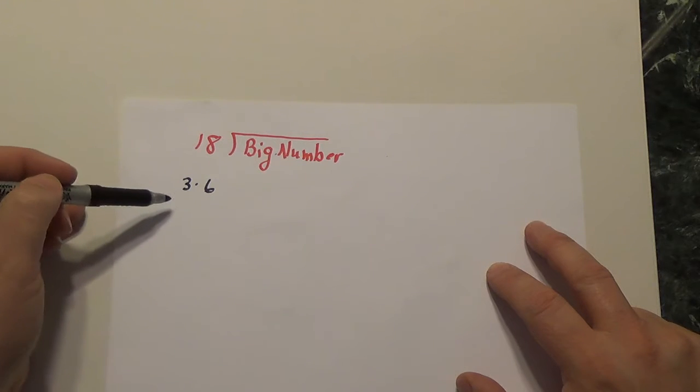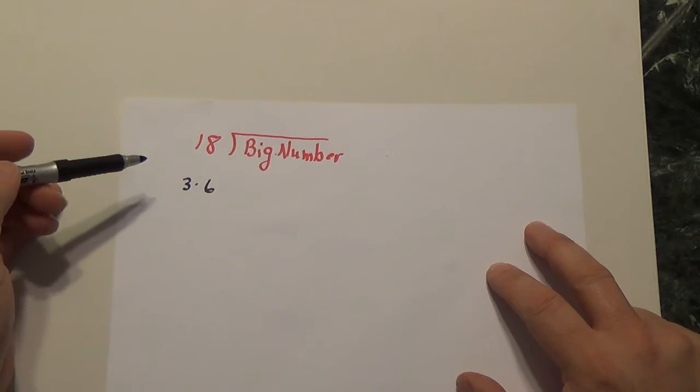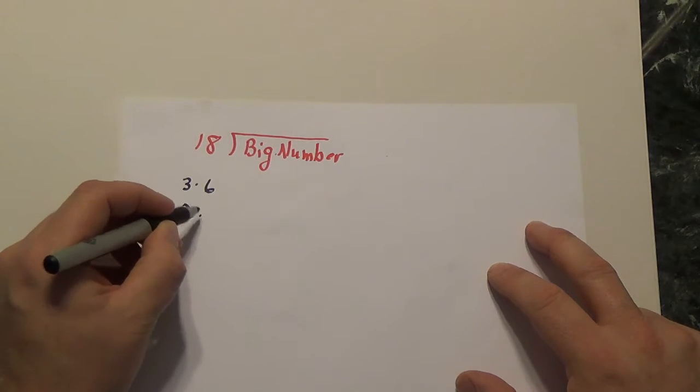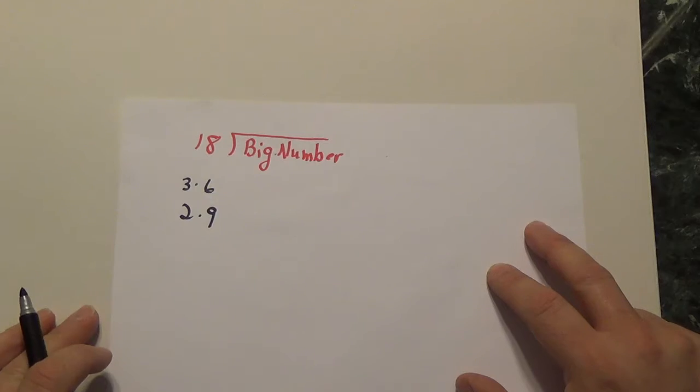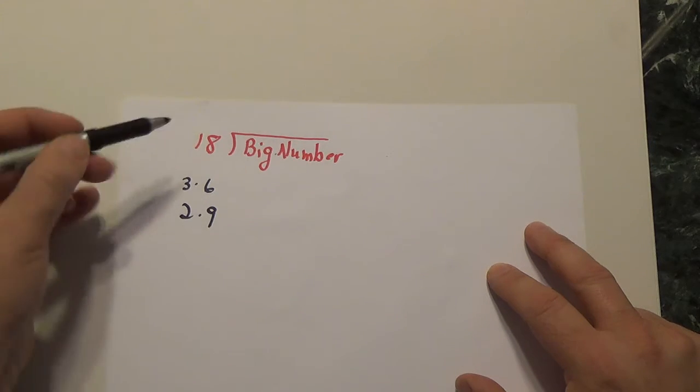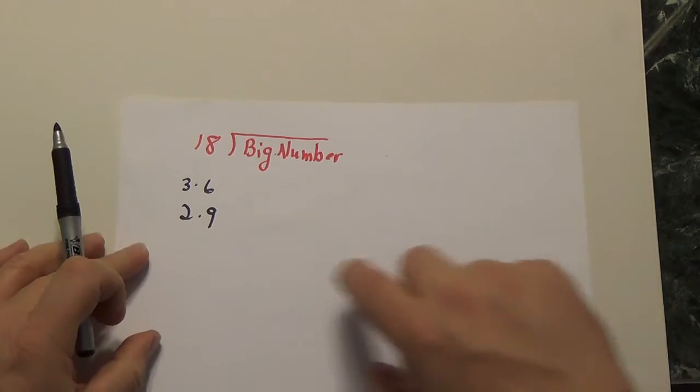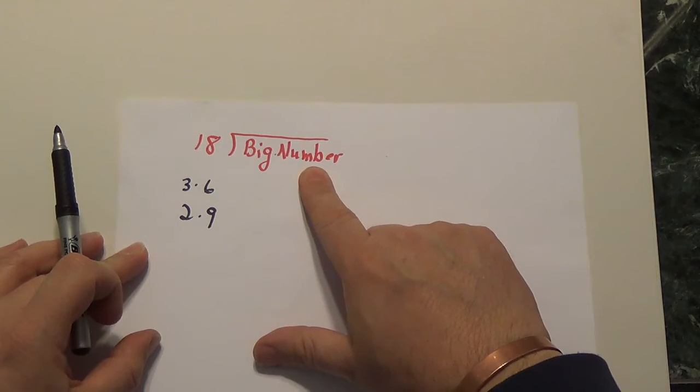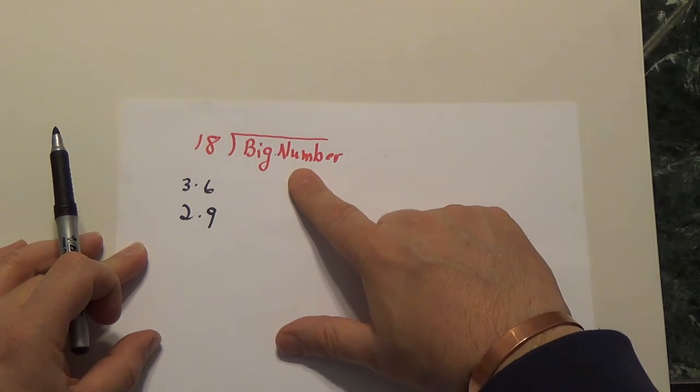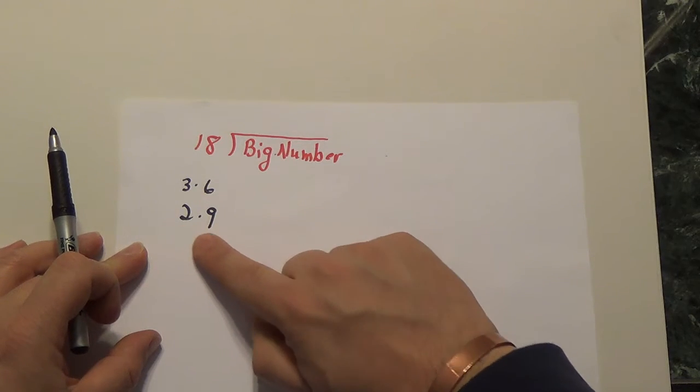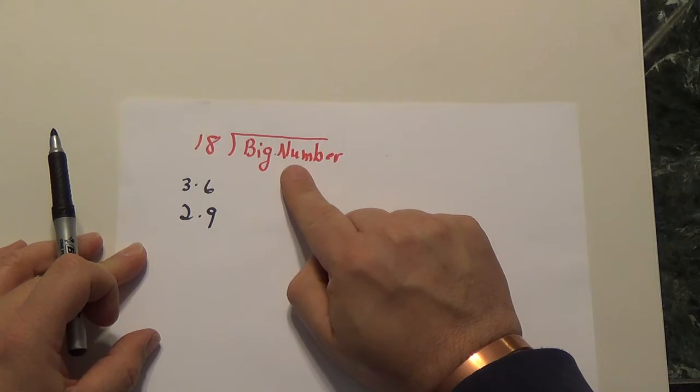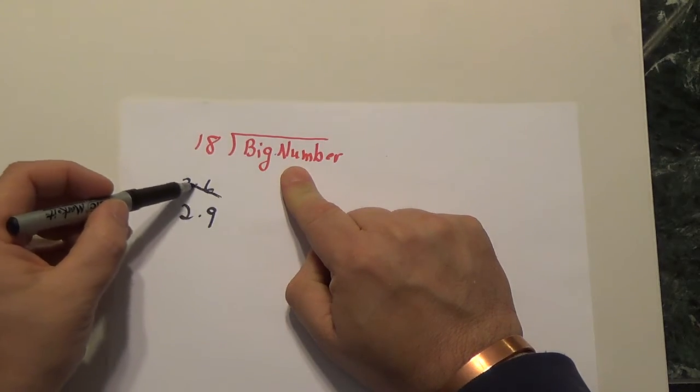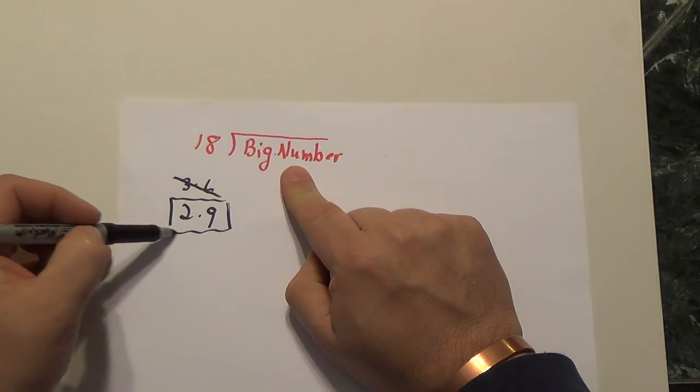The problem with 3 and 6, though, would be that they're not relatively prime. So I think, and I say to myself, wait, 2 times 9 is 18, and 2 and 9 are relatively prime. So I would check to see, does 2 divide big number? Does 9 divide big number? And if you say yes to the 2 and to the 9, then you can say yes to 18 dividing big number. So this pair would be out, this would be the pair that I would check.